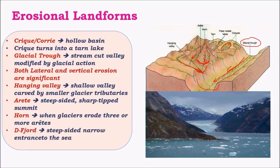A fjord is a structure similar to a river valley, where all the glacial debris flows through the valley into the sea. These kinds of structures are found only in a few countries like New Zealand and Scandinavian nations where glacial action is important. They are rare in Antarctica, Arctic, and Greenland regions.